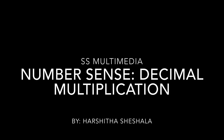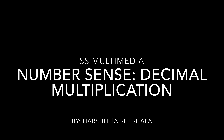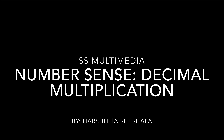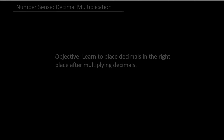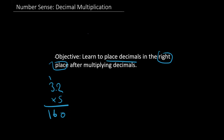Hello everyone, welcome to SS Multimedia. This is Hirshita Sheshalan and in this lesson we'll be talking about decimal multiplication. Our objective for today's lesson is learning to place decimals in the right place after multiplying decimals. So what I mean is, like if we have 3.2 times 5, we'll learn where to put the decimal points. So let's get started.